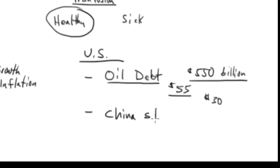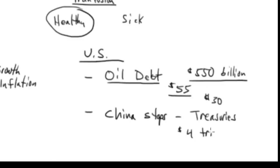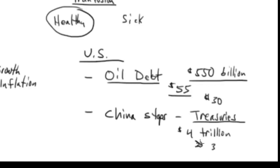China was at four trillion dollars in their holdings of US Treasuries, and that is down — we are now below three trillion. They are shedding this for a lot of reasons. China could just simply say one day, 'We're not buying anymore.'